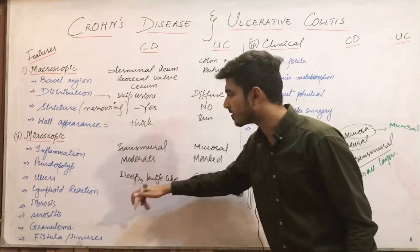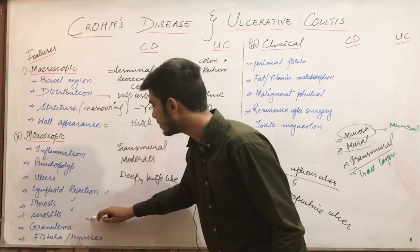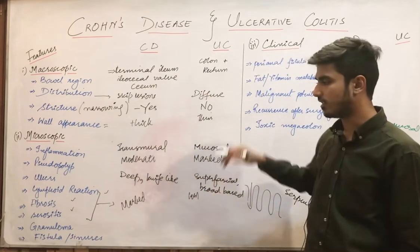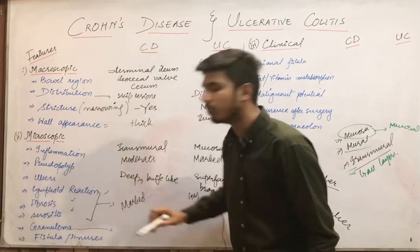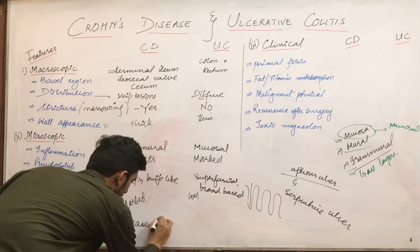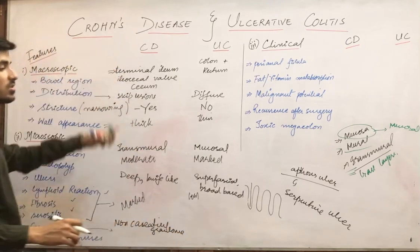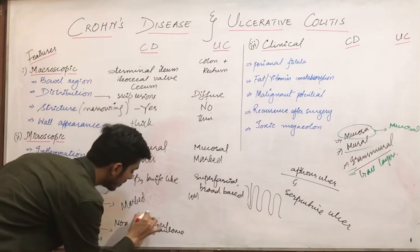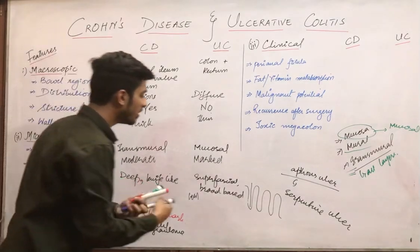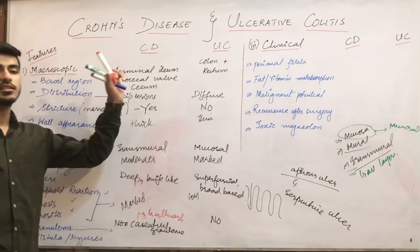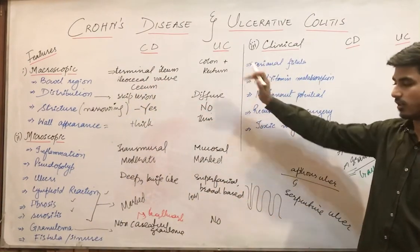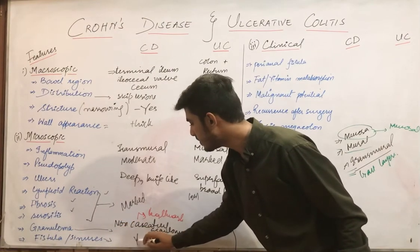Lymphoid reaction, fibrosis, and serositis are all more marked in Crohn's disease while less marked in ulcerative colitis. Very importantly, non-caseating granuloma formation occurs in Crohn's disease and this is the hallmark of Crohn's disease. The non-caseating granuloma is the hallmark of Crohn's disease, while granuloma formation does not occur in ulcerative colitis.